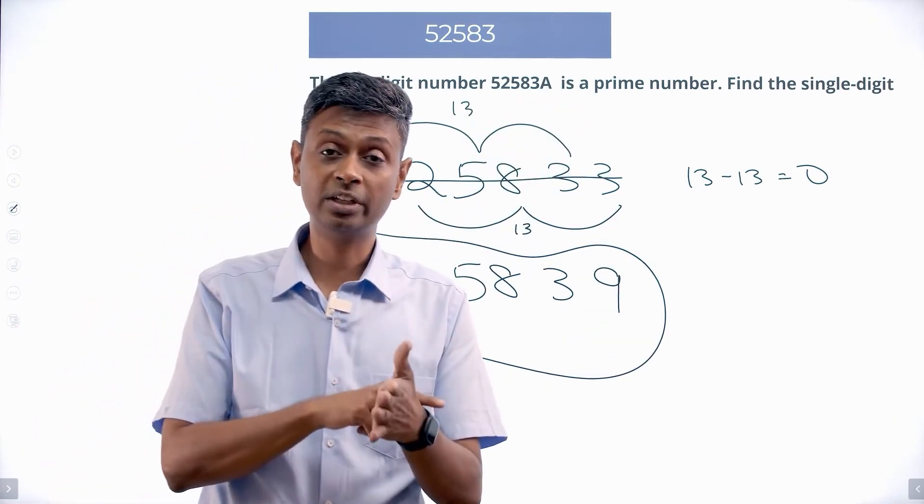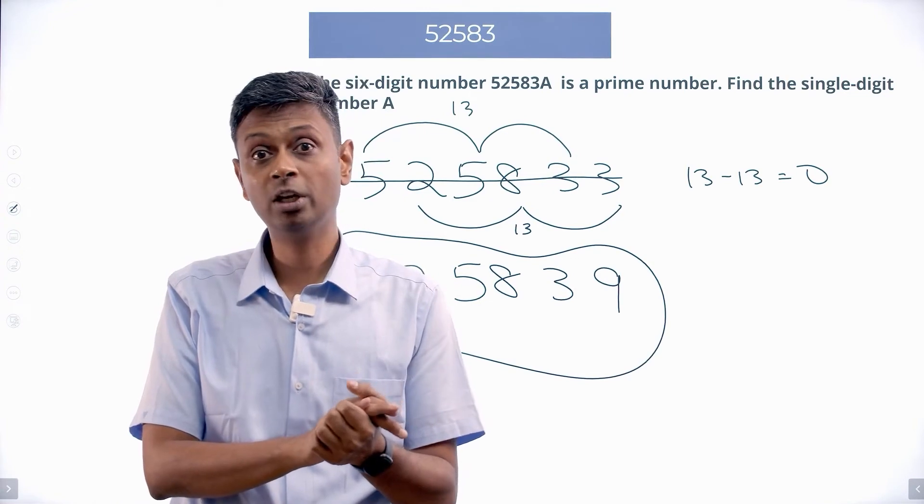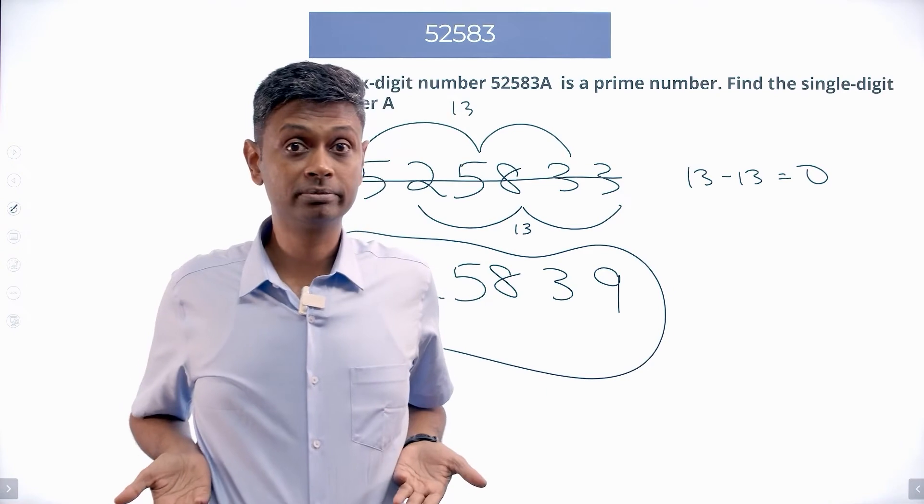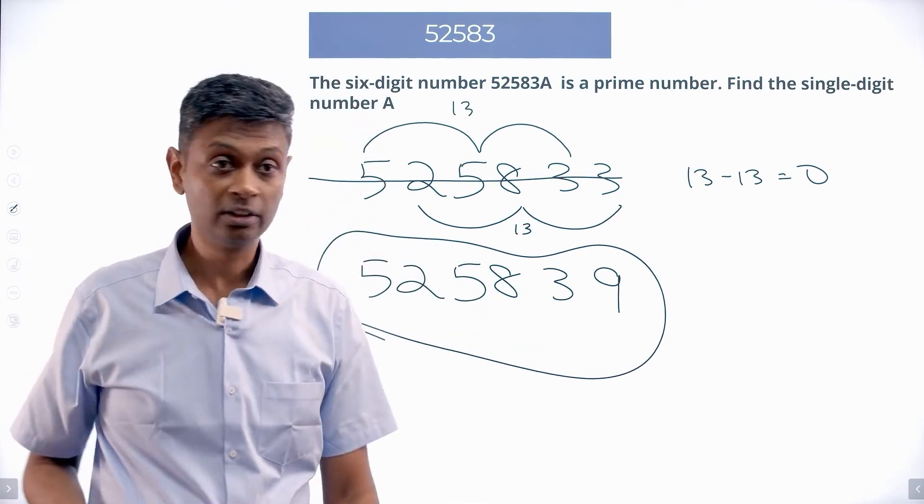A cannot be 0, 2, 4, 6, 8. A cannot be 5. A cannot be 1, 3, 7. A can only be 9.